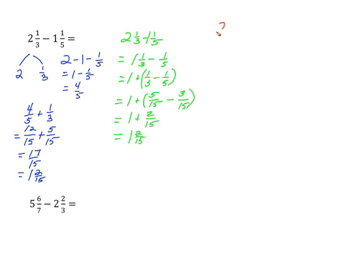So let's start with our original problem: two and one-third minus one and one-fifth. We'll convert both of these to improper fractions. Two times three is six, plus one is seven, so I have seven-thirds. And one times five is five, plus one is six, so we get six-fifths.